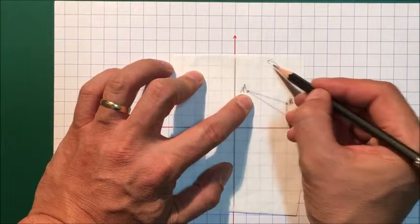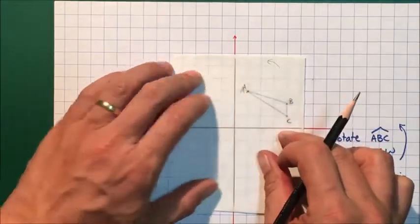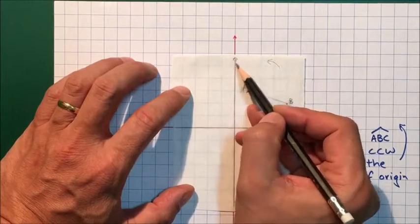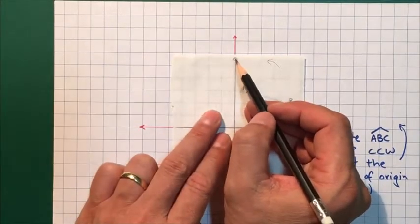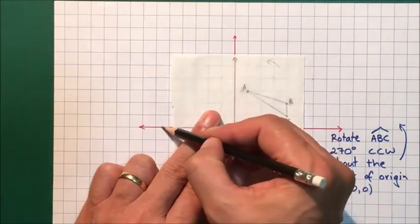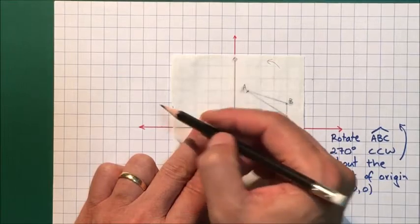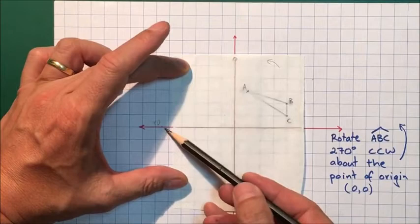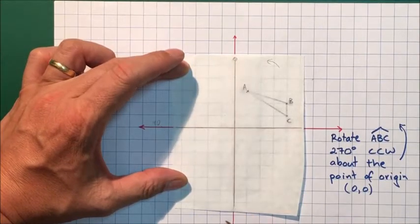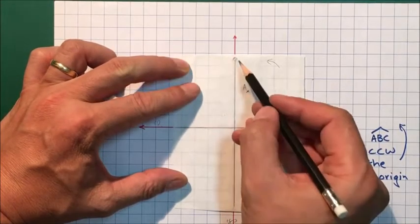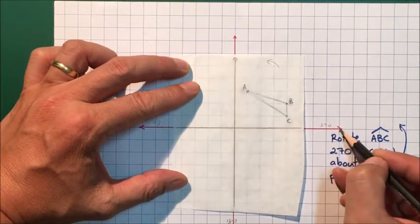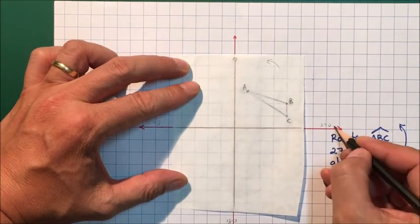counterclockwise. Now I'm going to go 270, which is three 90s. I'm going to use this as my reference axis. When this gets to this point, I've gone 90. When this goes to here, I've gone 180. And when this goes all the way around here to this axis, I've gone 270.